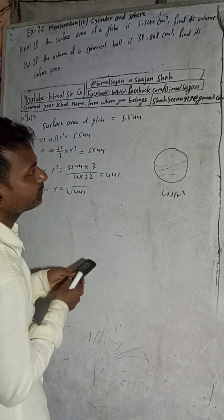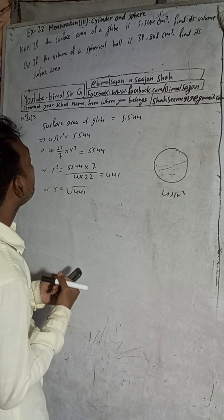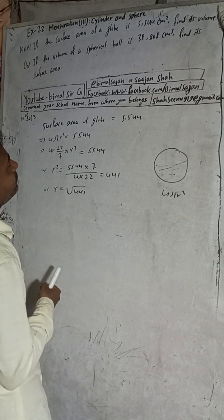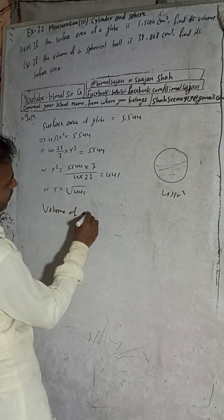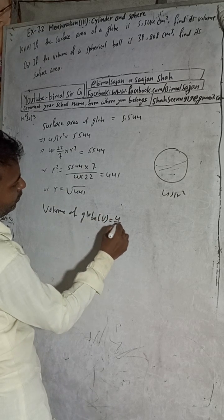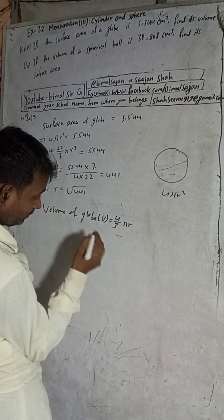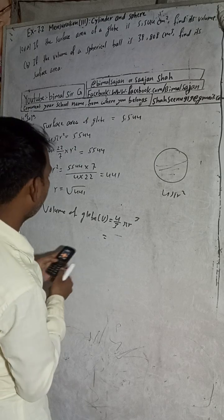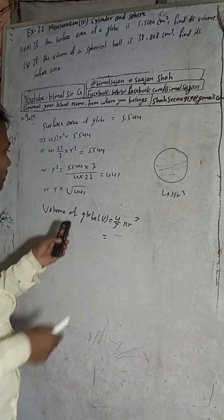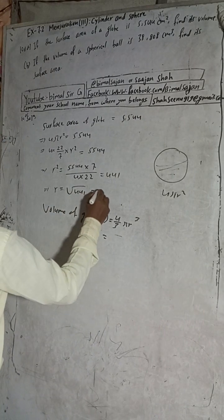Now we need to find r. There is no root function available on this device, so I will use another mobile to get the root value. The square root of 441 is 21. So r = 21 cm.